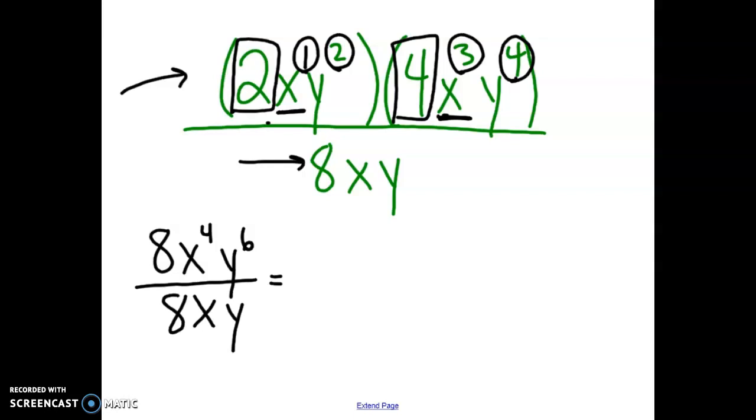All right, so we've done the multiplication that was in the numerator up here. Now all we have left is division to take care of. Remember the division rule. When we are dividing, we subtract the exponents.